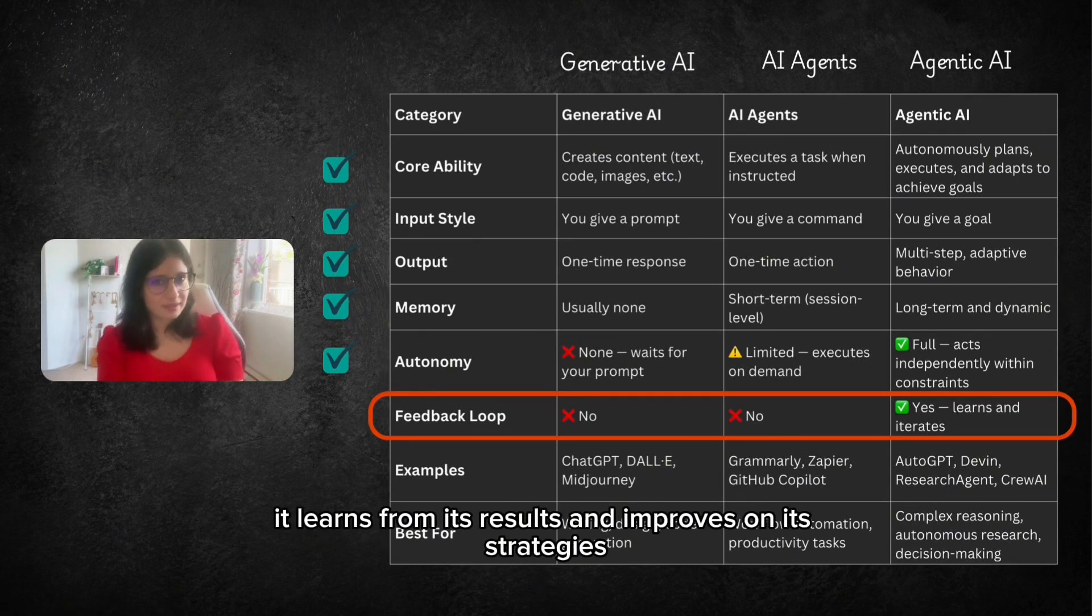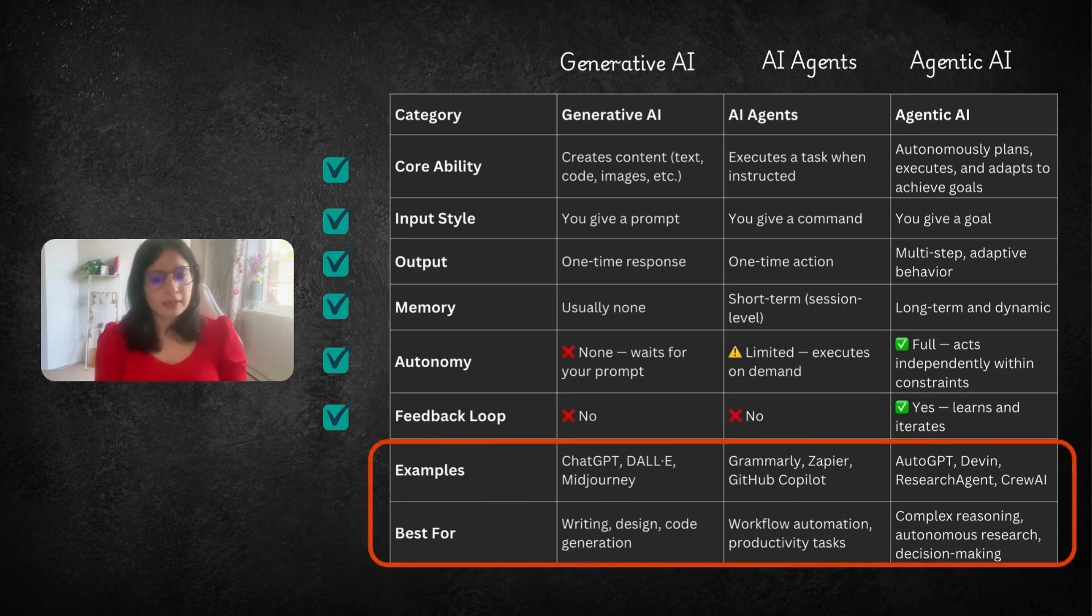It learns from its results and improves on its strategies. So in short, Generative AI is best for writing, designing content. Whereas AI Agents are best for automation and performing simple routines. Whereas Agentic AI they are best for research, complex tasks, decision making.